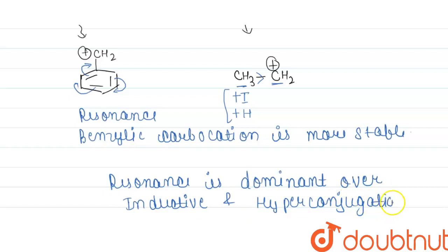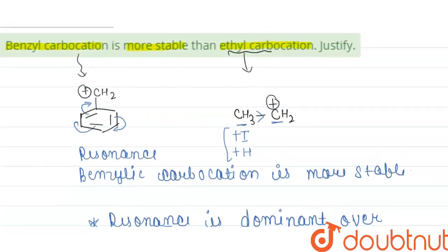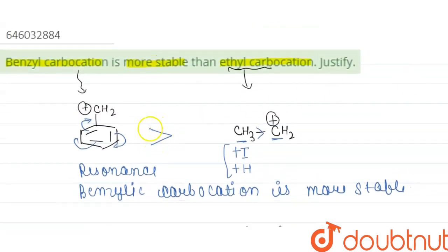If there is resonance in your system, then you have to consider the resonance because the effect due to resonance is higher than inductive and hyperconjugation. So that is why this one is more stable.